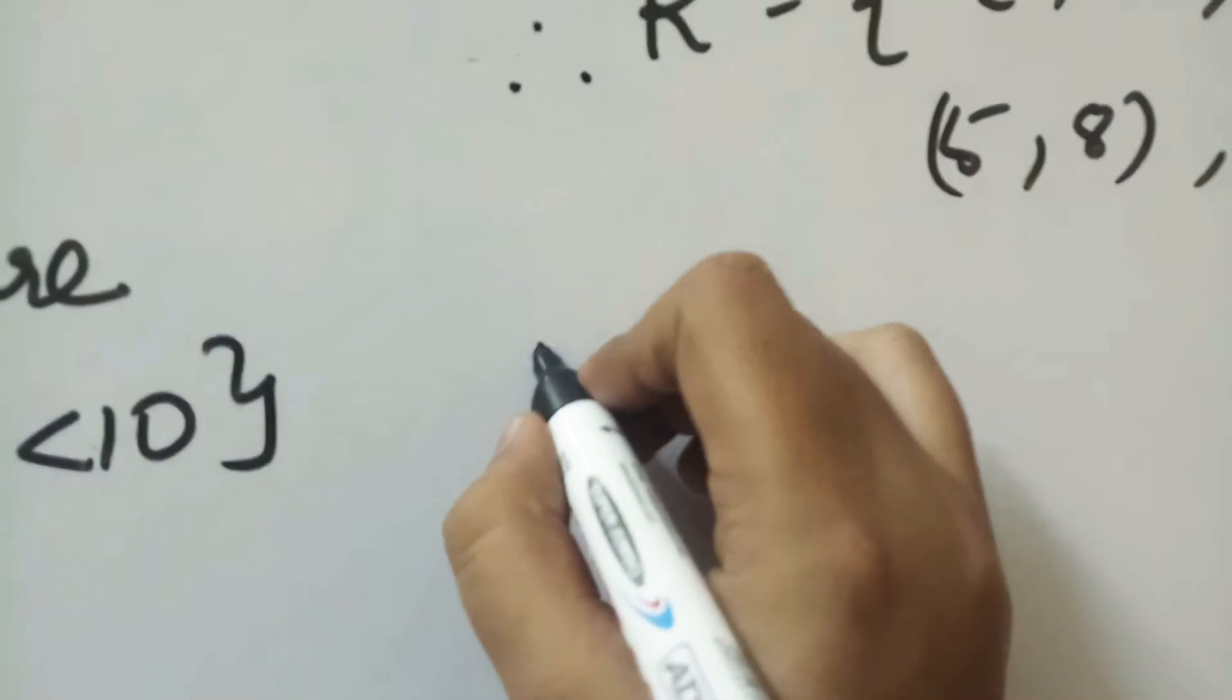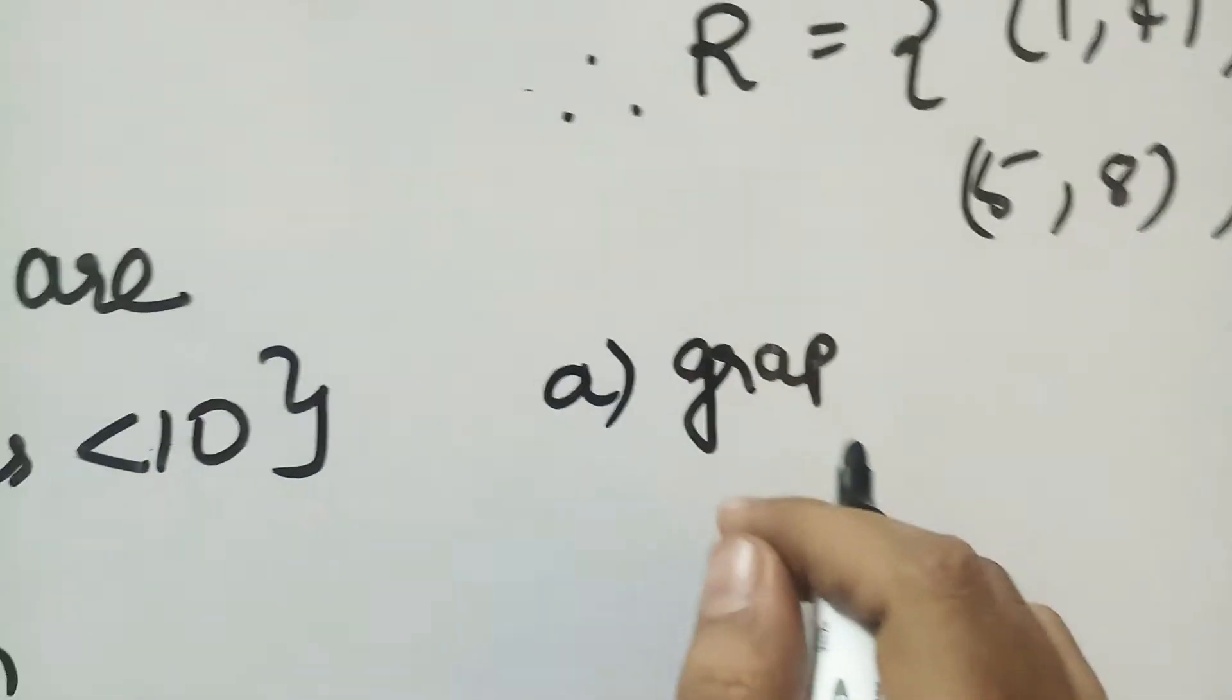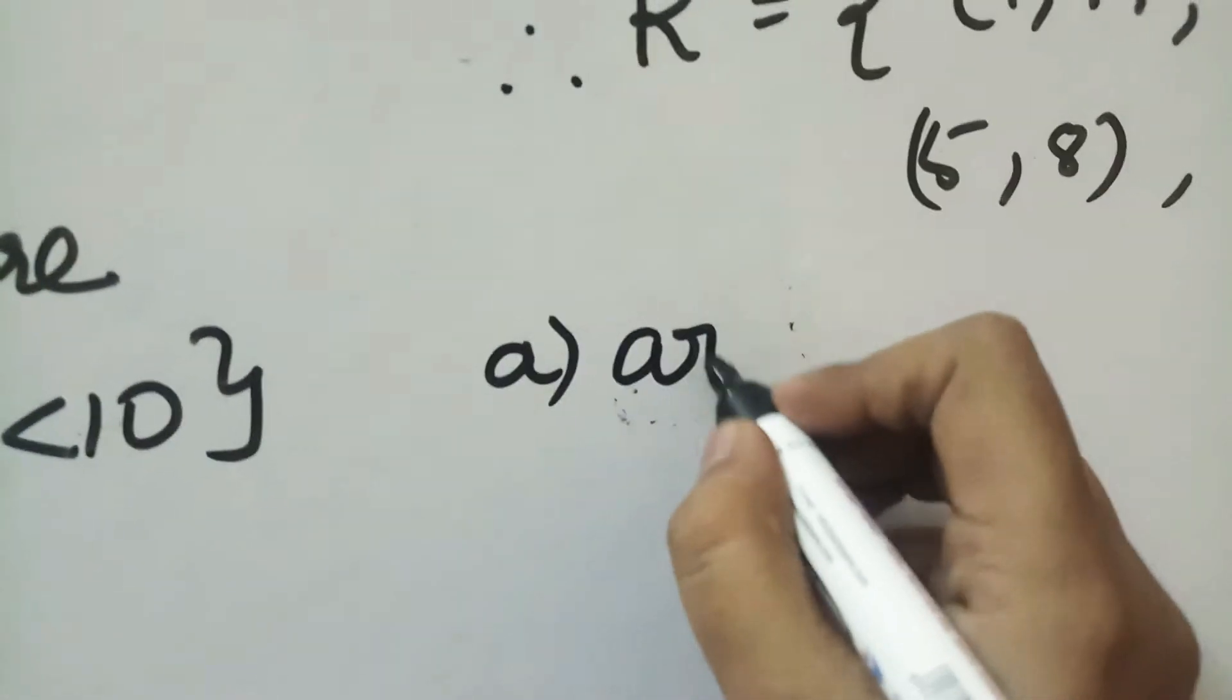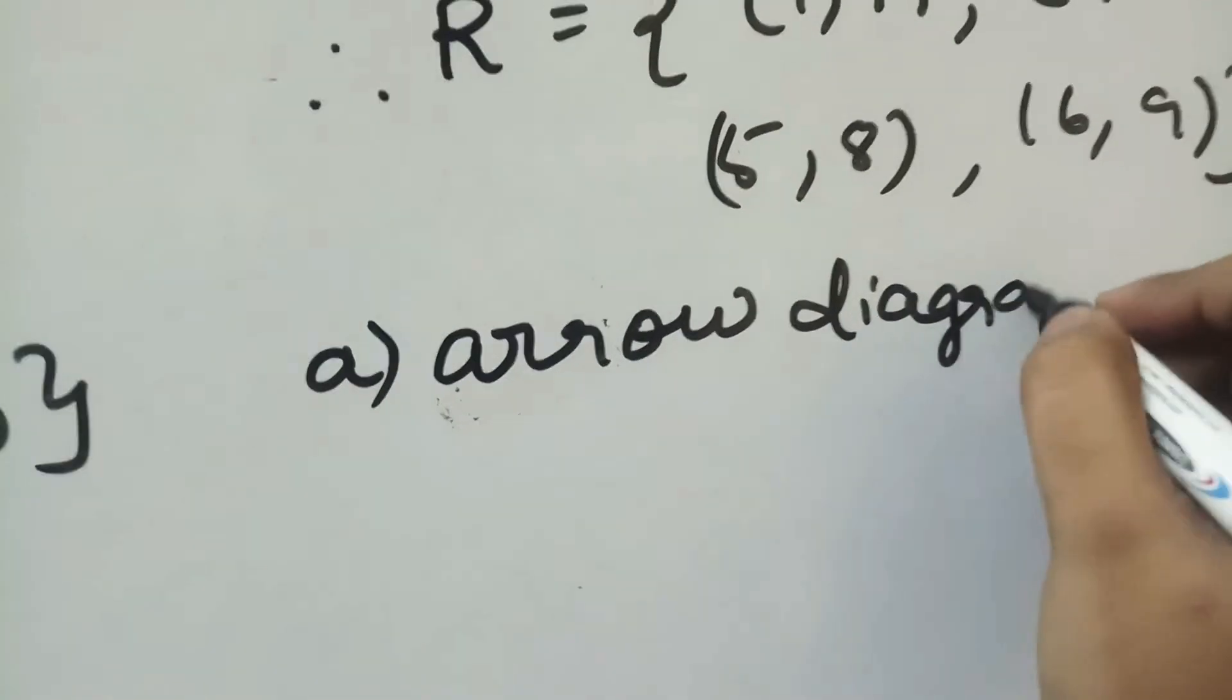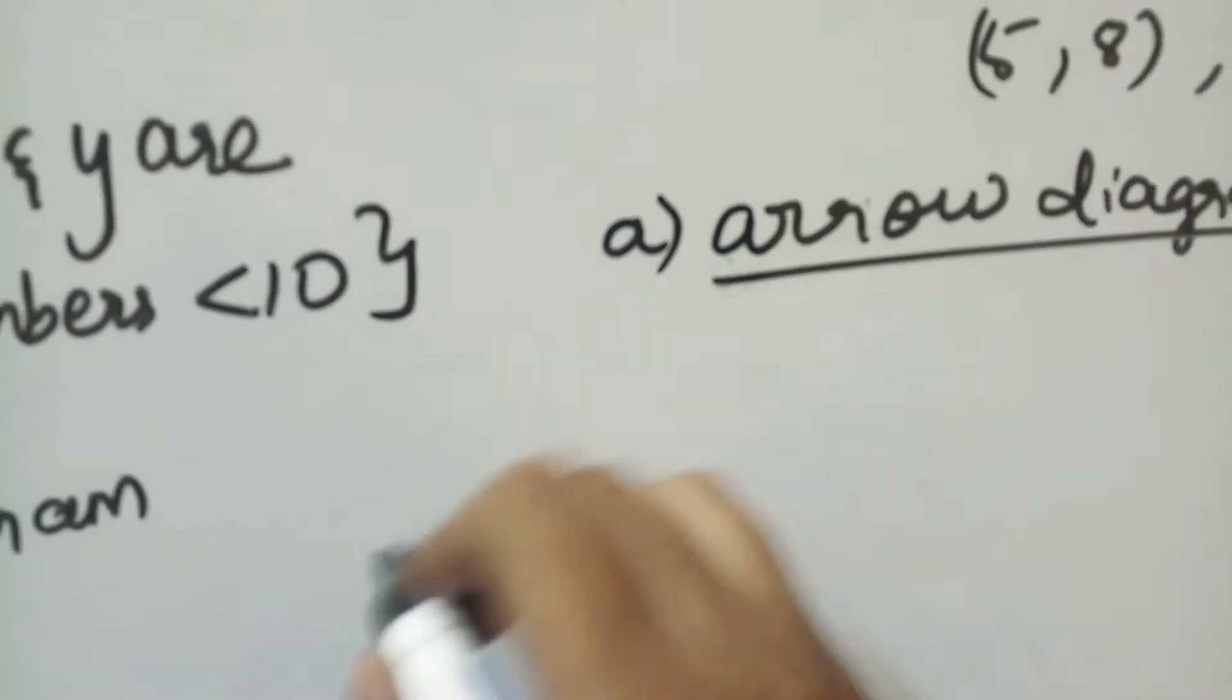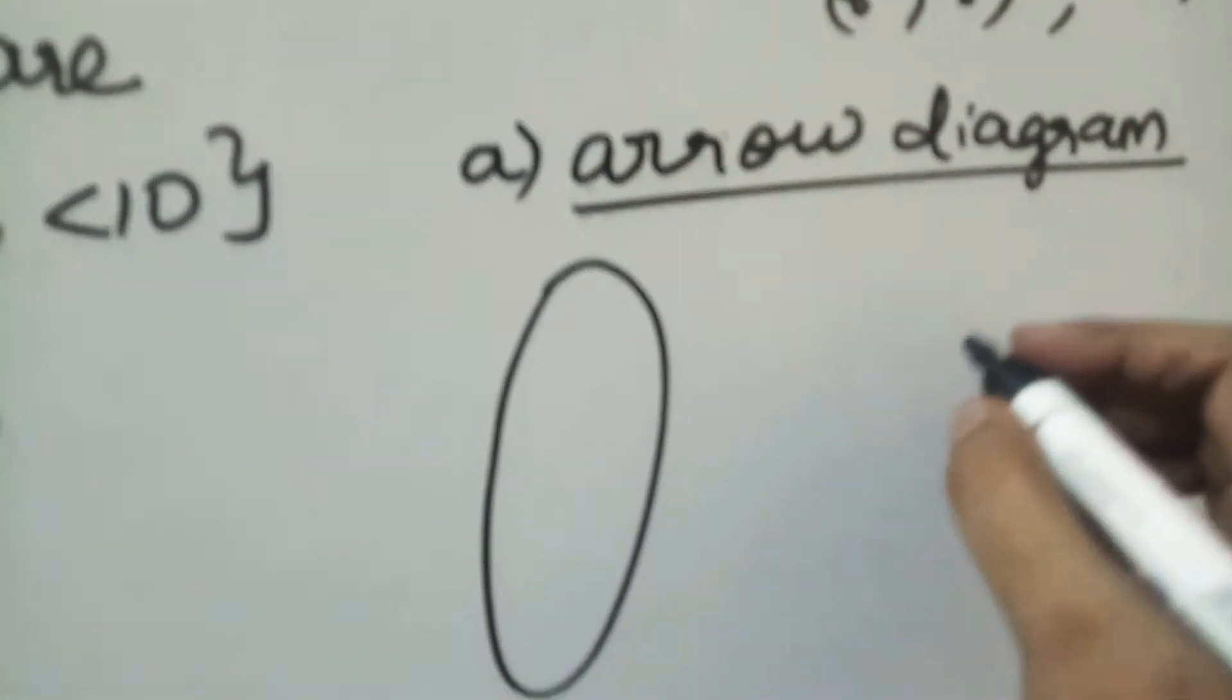So now the arrow diagram. We'll take R, which is the relation between x and y. So first, x and y.